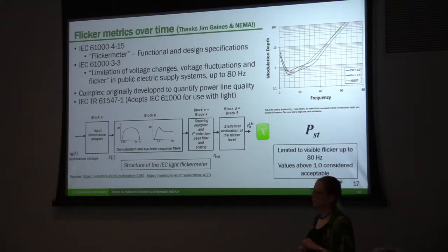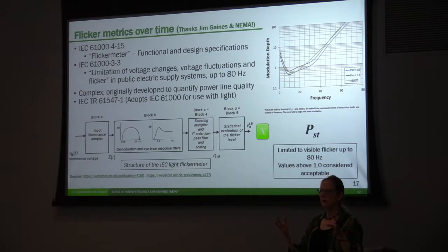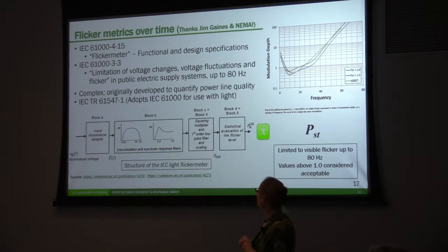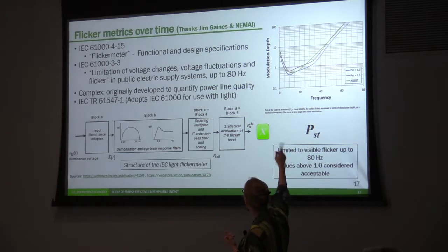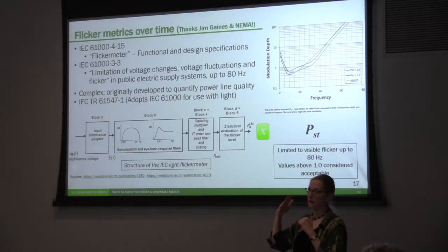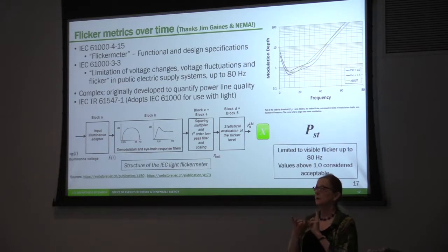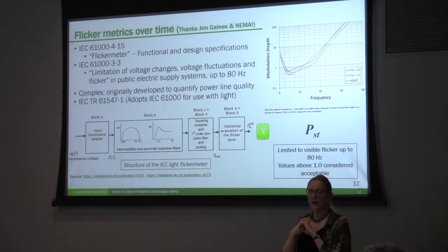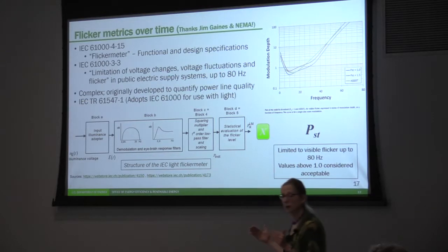There have been some subsequent flicker metrics developed. One is the flicker meter approach — very old — originally looking at electrical systems trying to figure out how much flicker on an electrical distribution line was acceptable. That was looking at lower frequency flicker, generally up to about 60 Hz. The Lighting Research Center also had an assist document that talked about low-frequency flicker, and they came up with a standard that's pretty close to the PST standard. Both are plotted and they're very close.